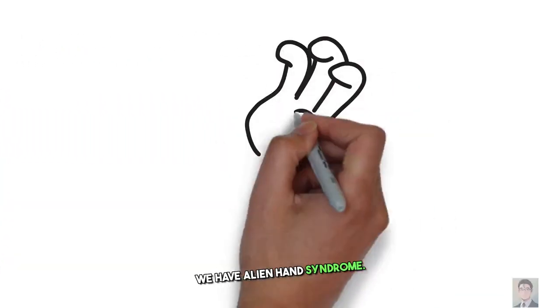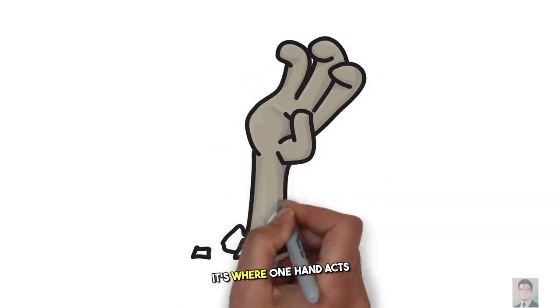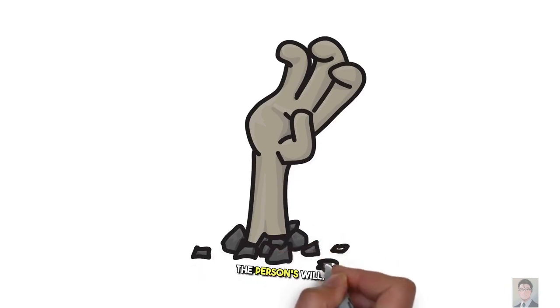At number 2, we have alien hand syndrome. As the name suggests, it's where one hand acts independently and even against the person's will. Here's a video of it.